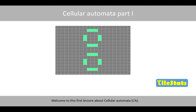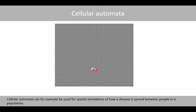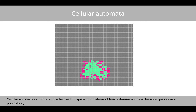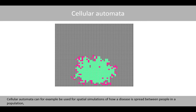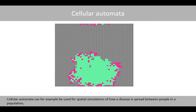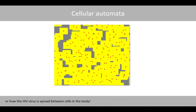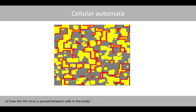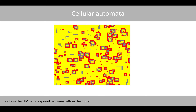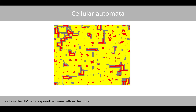Welcome to this first lecture about cellular automata. Cellular automata can for example be used for spatial simulations of how a disease is spread between people in the population, or how the HIV virus is spread between cells in the body.